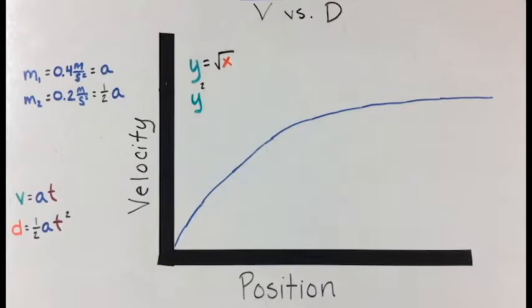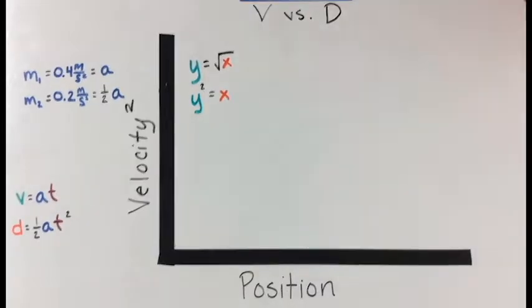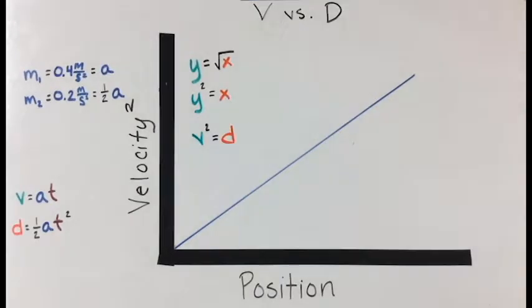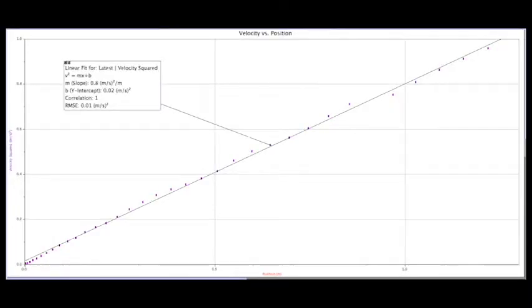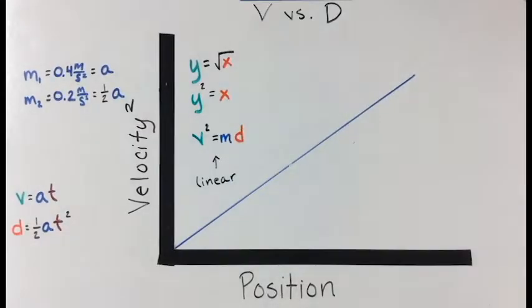Our graph looks like y equals the square root of x, which we can rewrite as y squared equals x. In our case, this is v squared equals d. So if we put v squared on our y-axis instead of v, we get a linear graph, with the slope equal to the change in the square of velocity over the change in position.